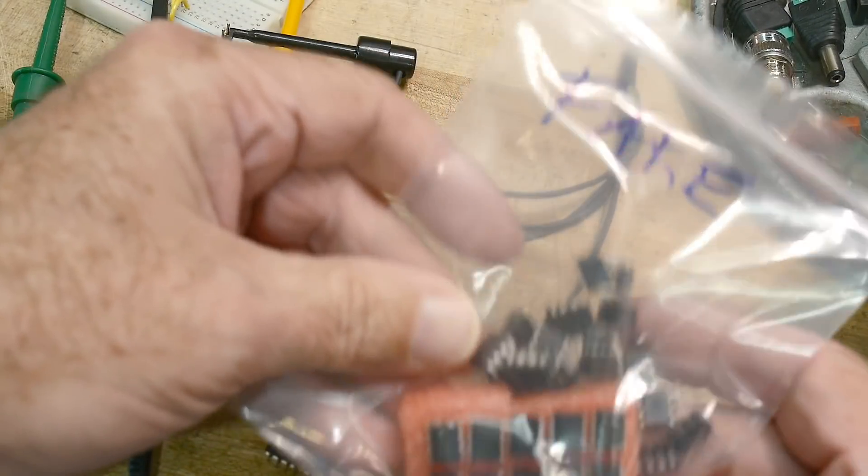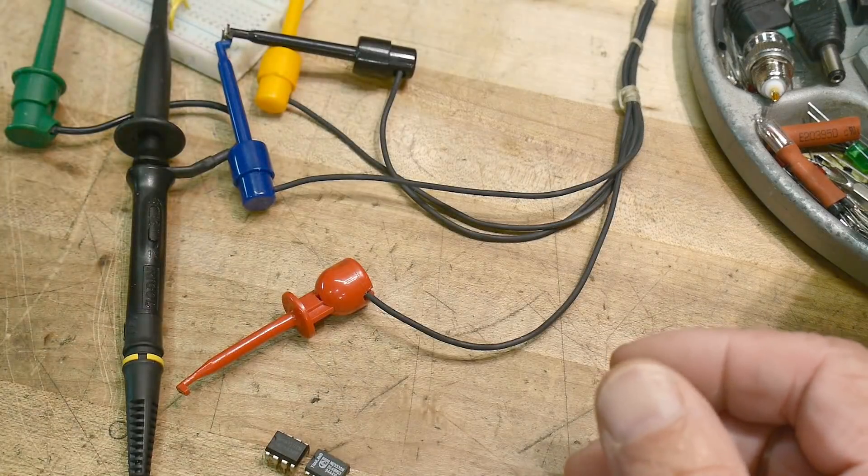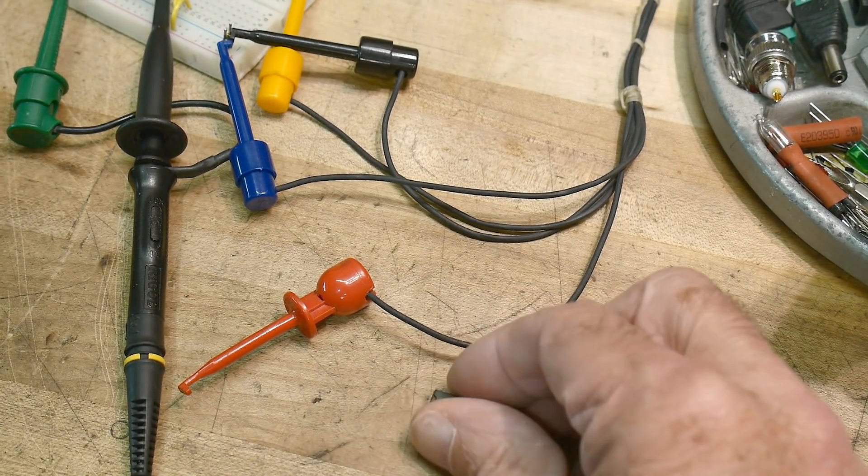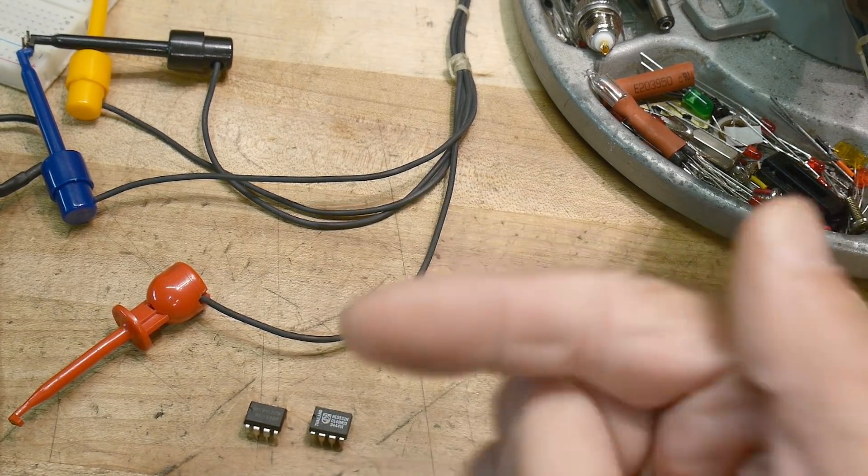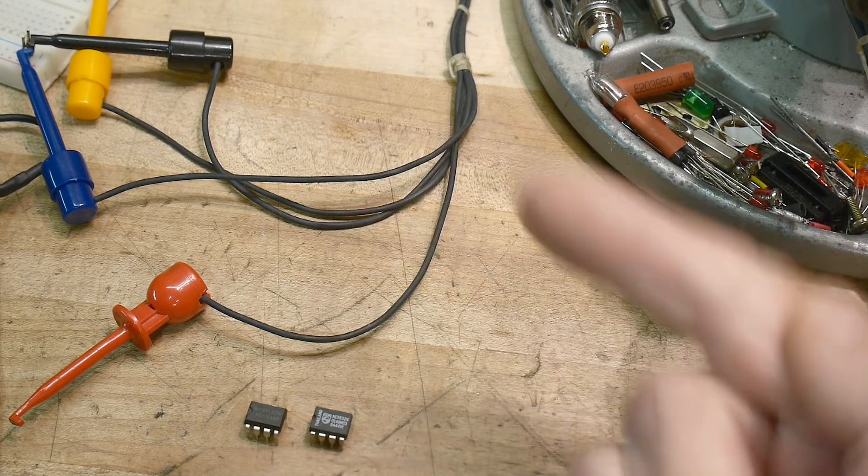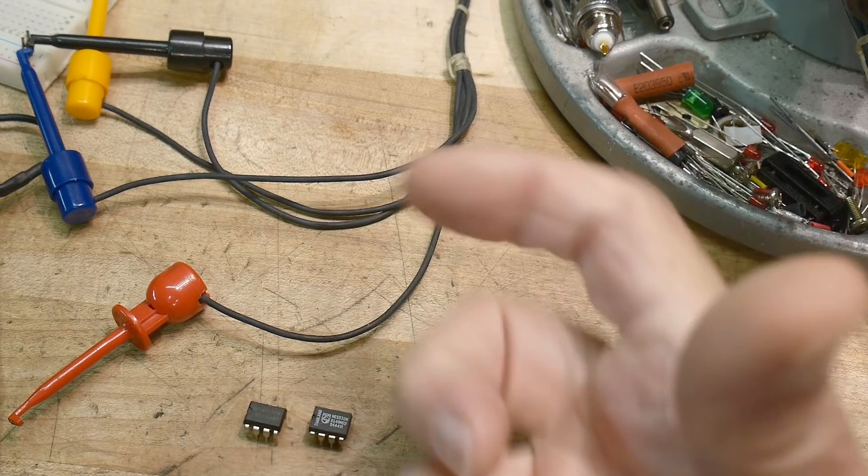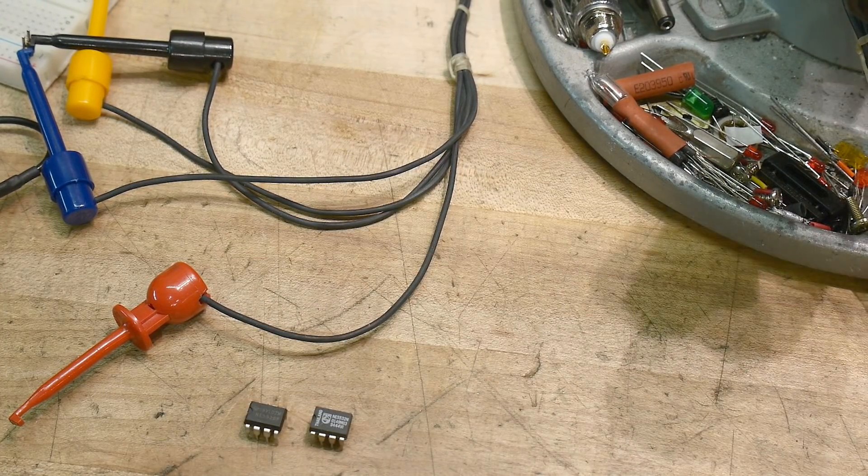I've got a whole fake bag of OP07s and other things now. So if you have some JRC 5532s or NE 5532s or something or other 5532s, there's a bunch of 5532s...